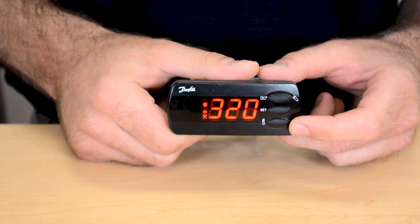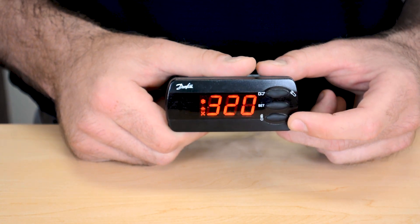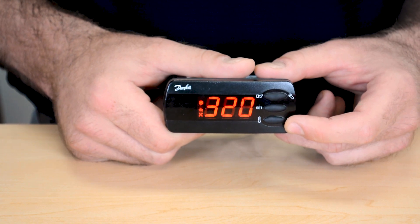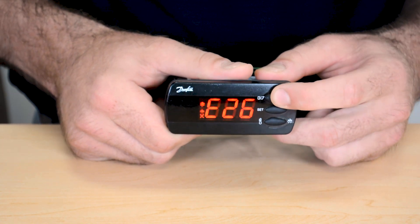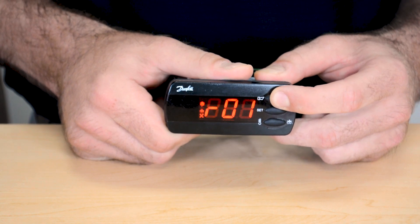A short press of the bottom button will show you what the defrost termination sensor is reading and a long press of the bottom button which is 5 seconds will initiate a defrost cycle. A long press of the top button which is about 5 seconds will take you into the parameter list starting with R01.